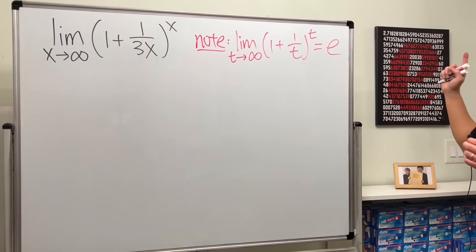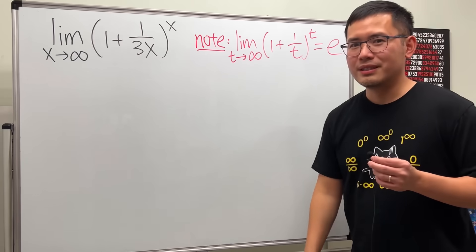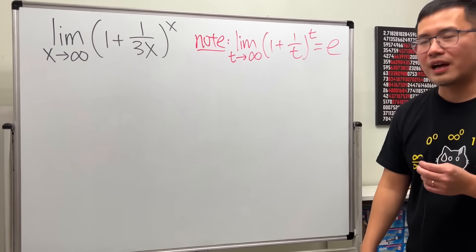What's e? Well, it's right here, which is about 2.71828, 1828, 459045, and so on.